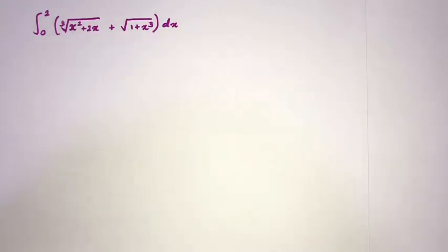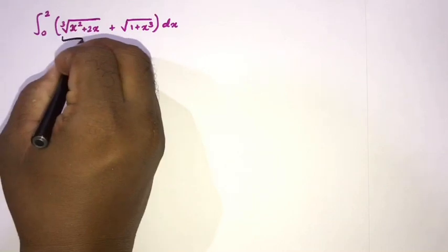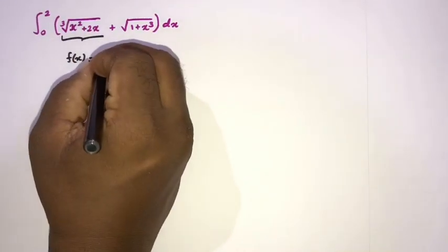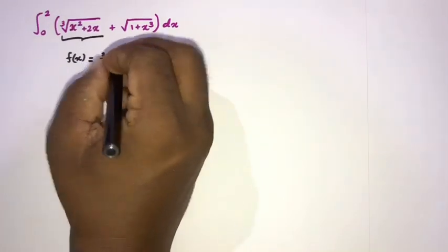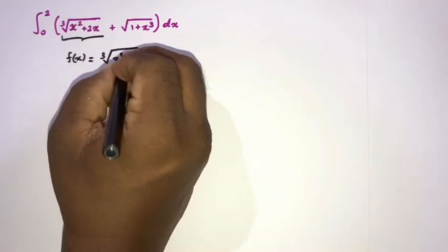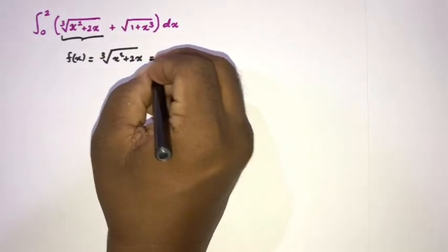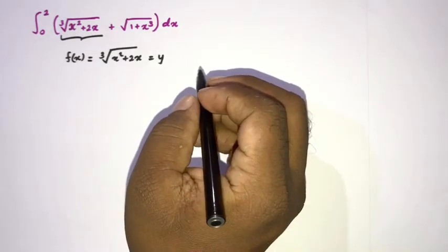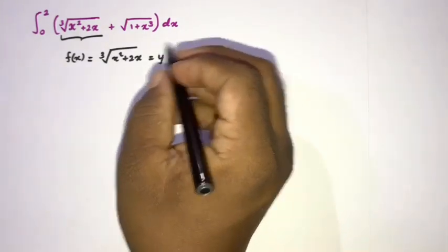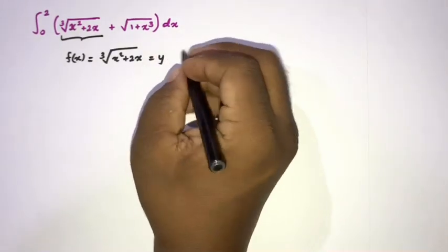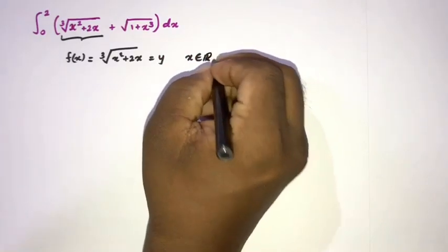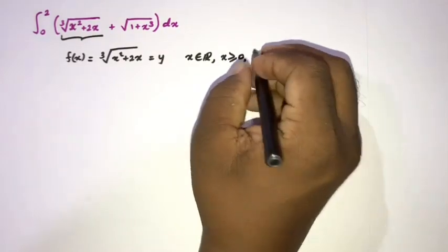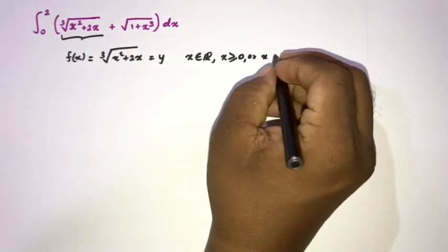The method I am going to use: take this part equal to f of x, so f(x) equals the cube root of x squared plus 2x. Now I am going to set this equal to y as well. You know how to find the inverse of a function. Here x is a real number, and x is greater than or equal to 0, or x is less than or equal to minus 2.